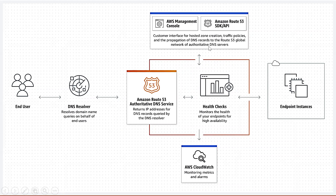Here is a basic idea of how Route 53 works — there is an end user and a DNS resolver. You should have basics about what is DNS, what an A record, CNAME, and all those things are, then it will be easier to understand Route 53. It also authorizes the DNS service, returns IP addresses, and performs health checks on EC2 instances. We can use the AWS Management Console, SDK, and CloudWatch metrics to monitor and set up alarms.